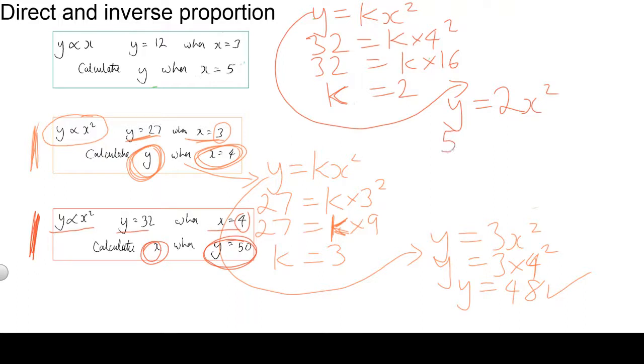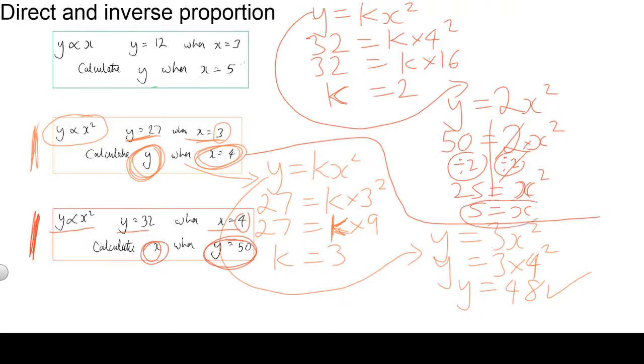So y is 50 this time. They've given us the value of y, we need to work backwards to get the value of x. It's equal to 2 x squared. To get rid of times by 2, you need to divide by 2. What you've done on this side, do on the other side. 50 divided by 2 is 25. That leaves you with x squared. Something squared to give me 25. Well, x is equal to 5, because 5 squared gives me 25. So that's our answer there, x is equal to 5.